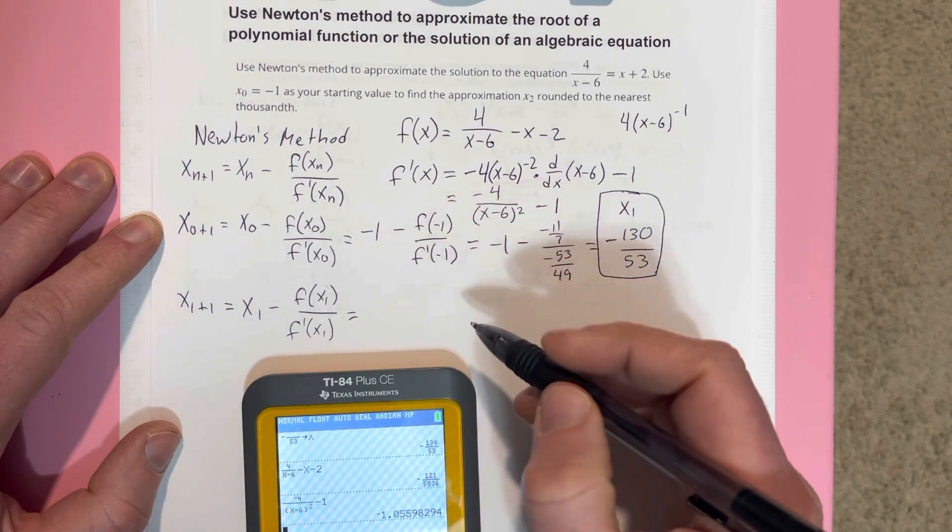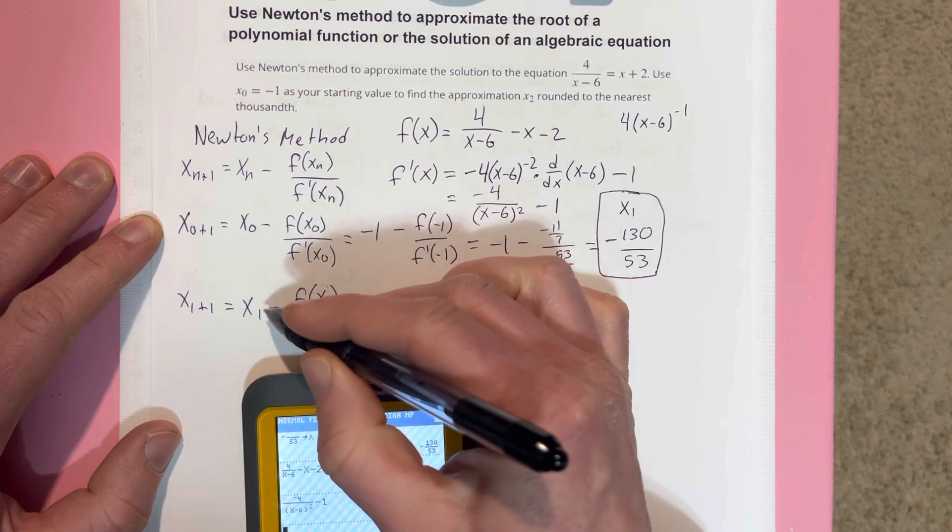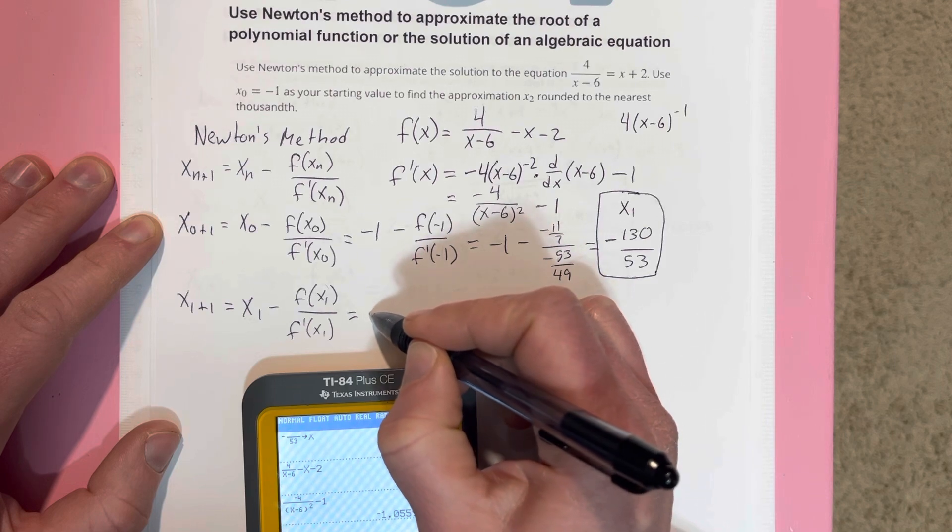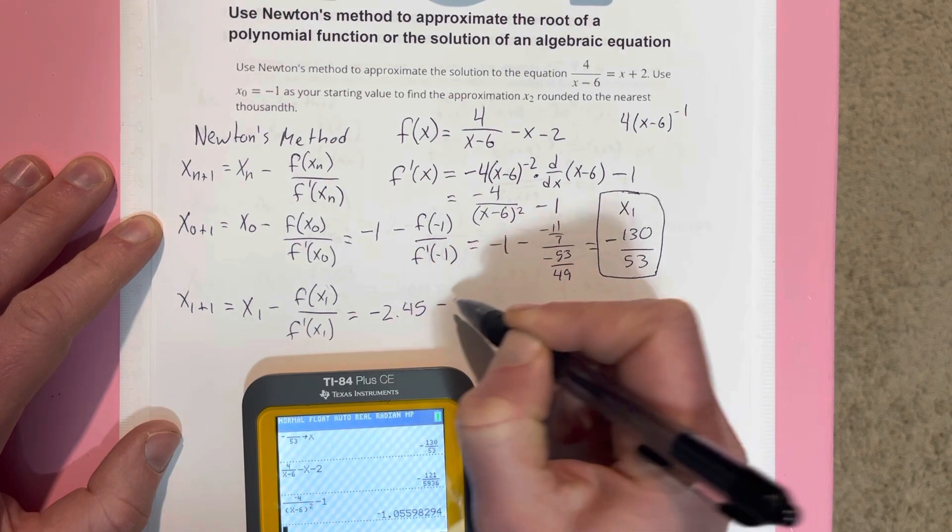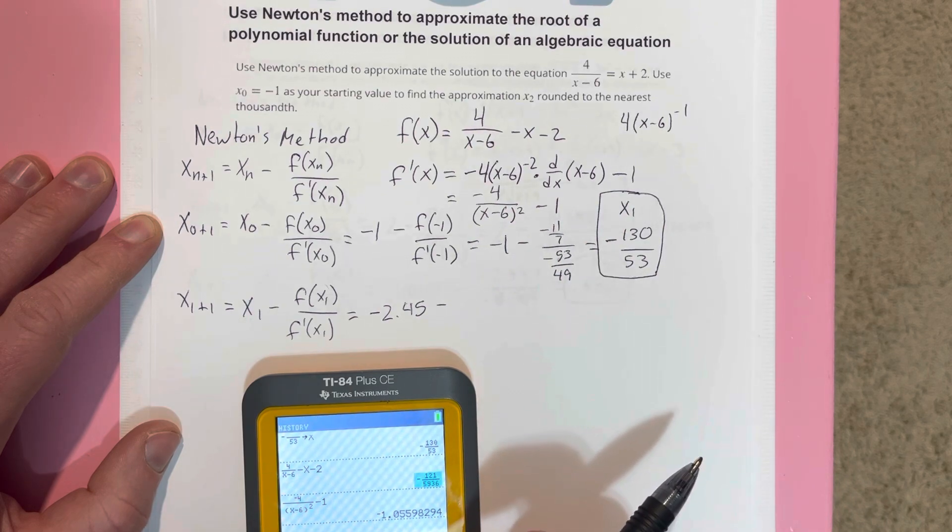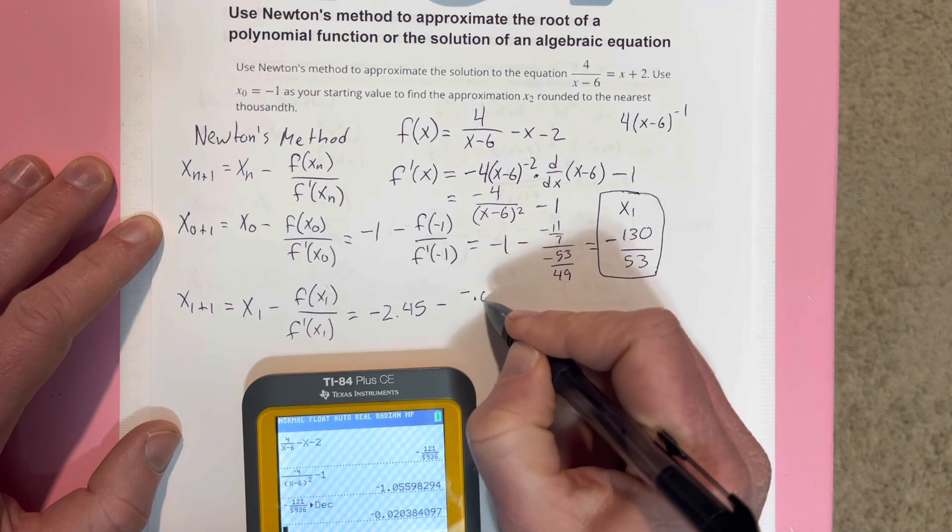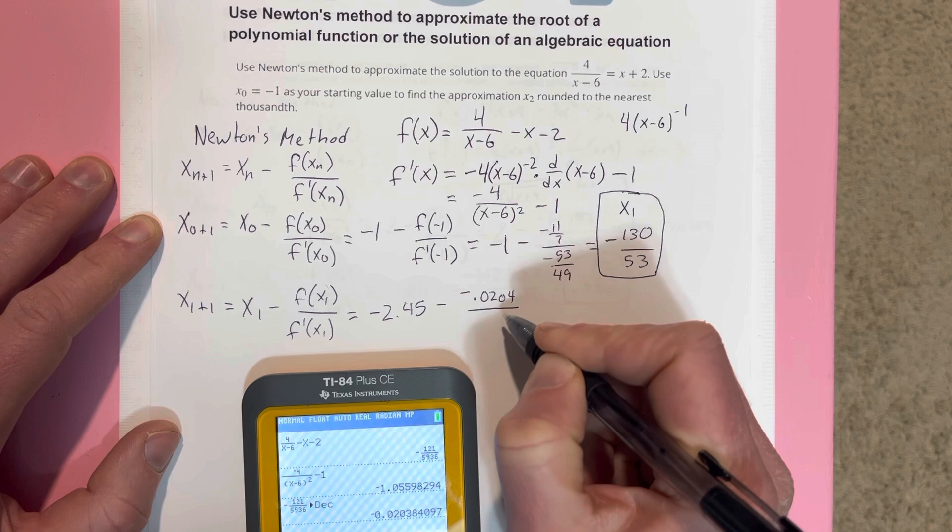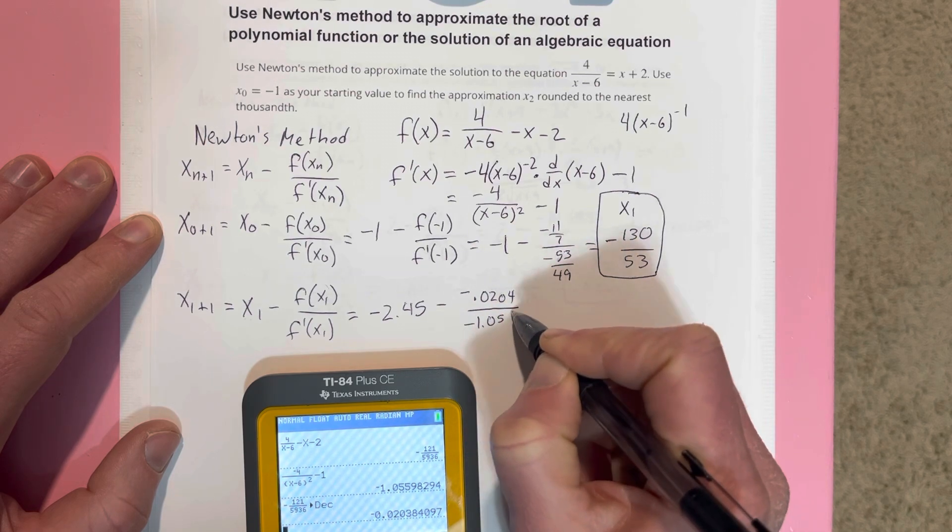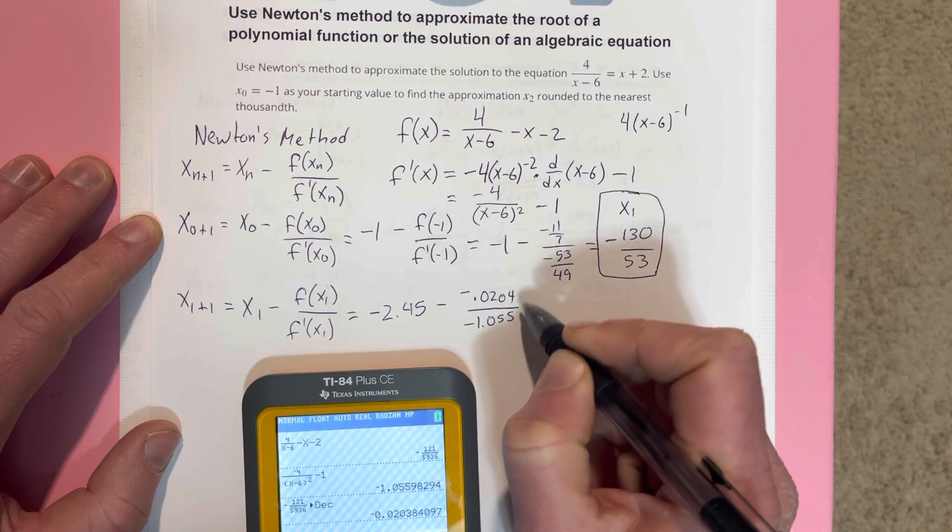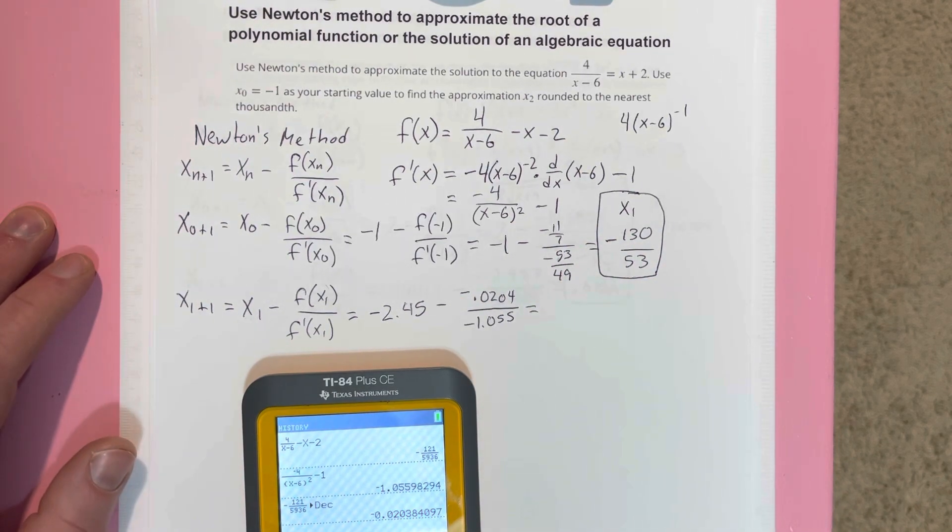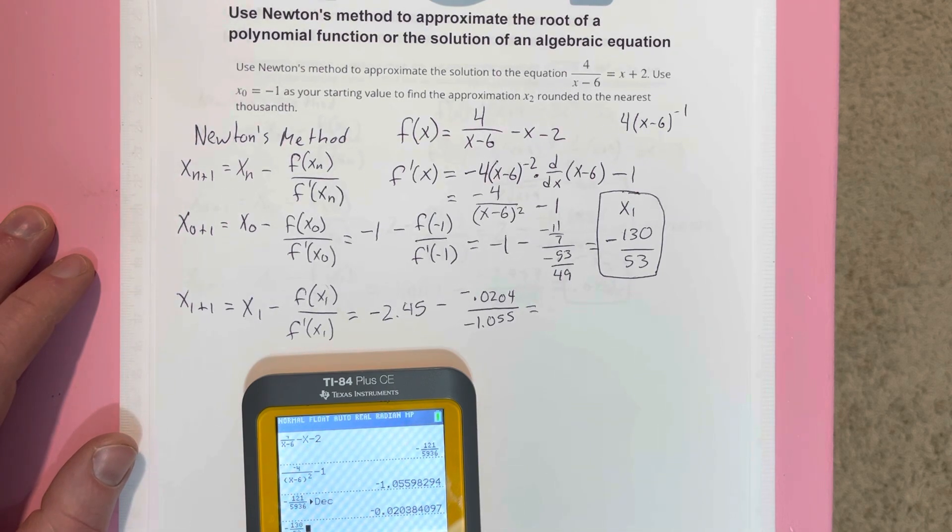This is just going to be x₁, which is going to be negative 2.45 that we had earlier, minus... if I take this and save math to decimal, I get negative 0.0204 over negative 1.055. So I'm plugging this in the calculator. I'm going to grab this, saying subtracting, and then I'm going to get this number. I'm going to divide it by this number here.